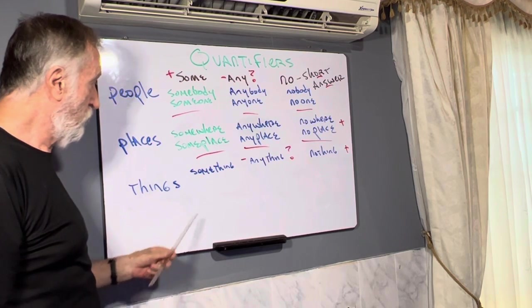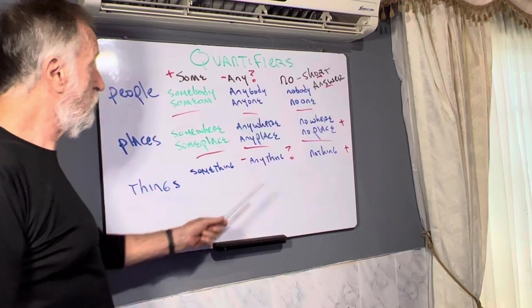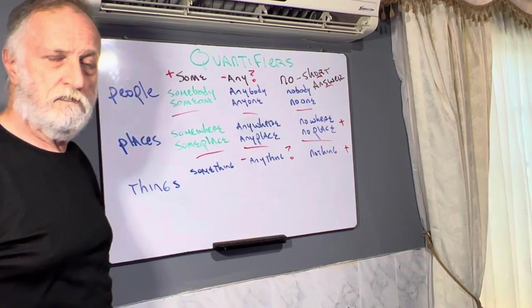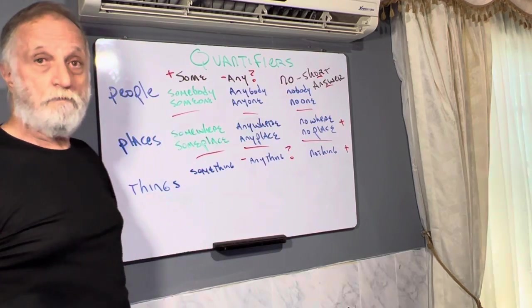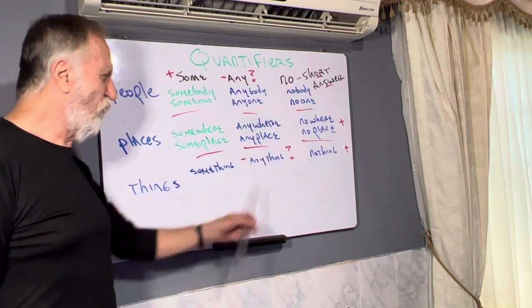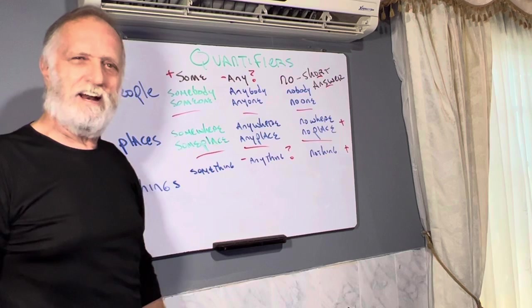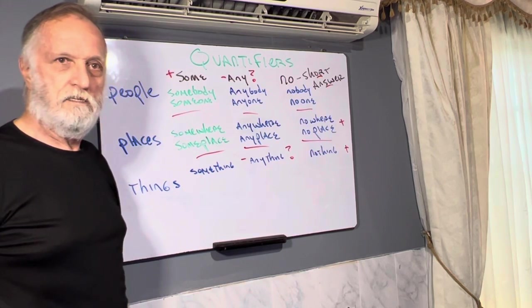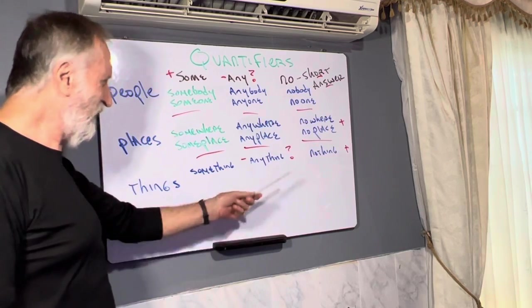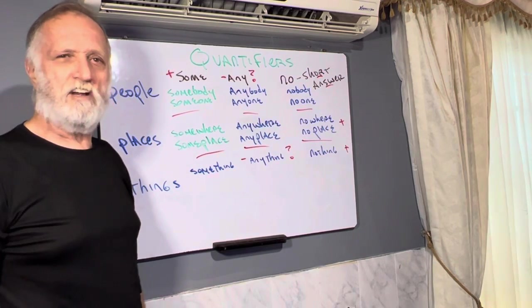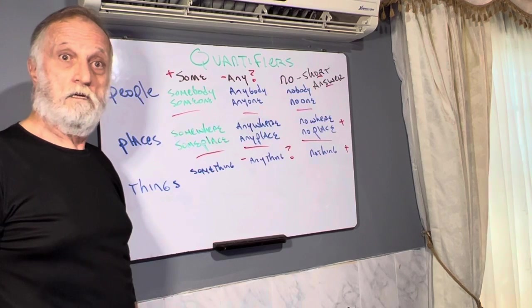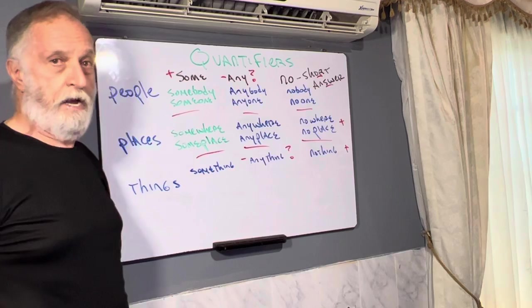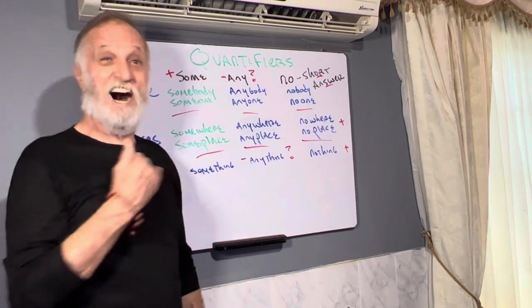And now, we got the cositas. Something. Anything. Nothing. Hey, let's do something different tonight. No, I don't want to do anything different. I like the same routine. Nothing. What'd you do yesterday? Nothing. You didn't do anything? No. I did nothing.